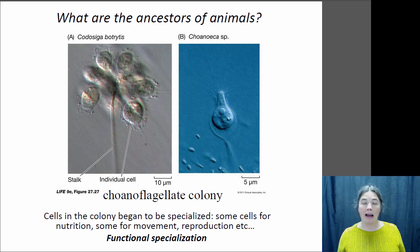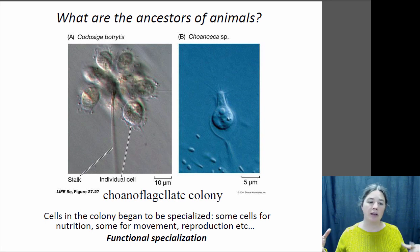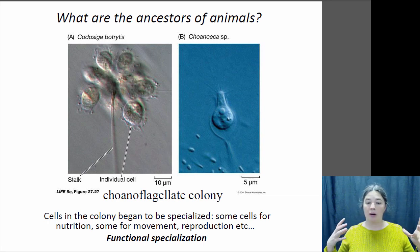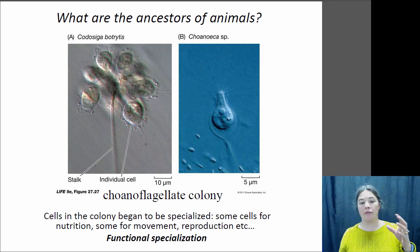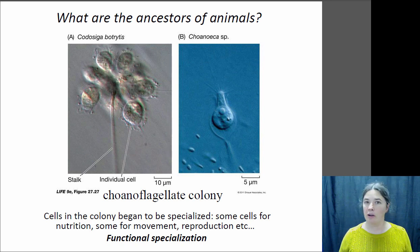What we think happened is that some creature that was kind of like a choanoflagellate was forming these colonies, and certain cells within those colonies began to become specialized. There was the evolution of multicellularity in the ancestor of animals, where some cells became specialized for movement, reproduction, and nutrition.